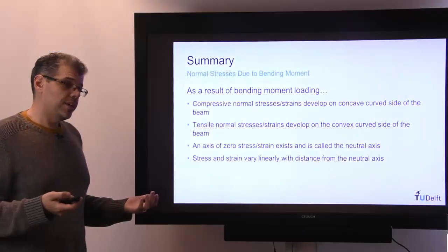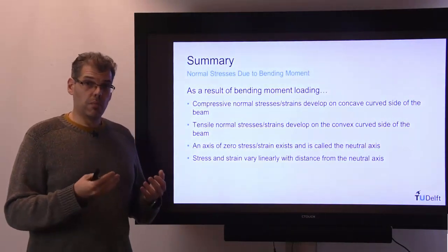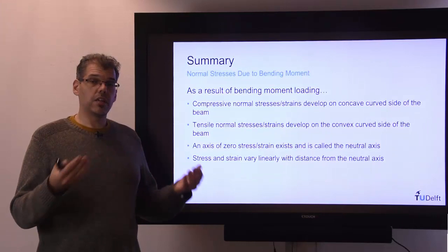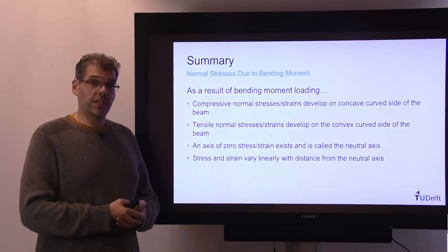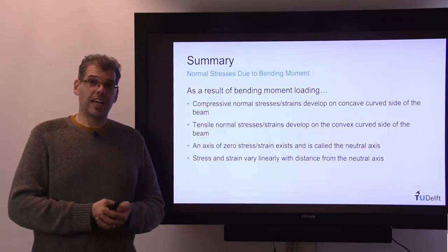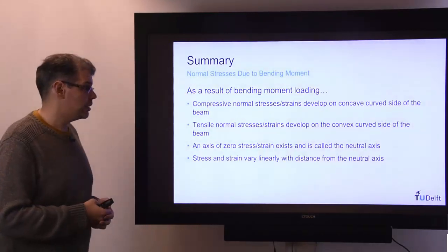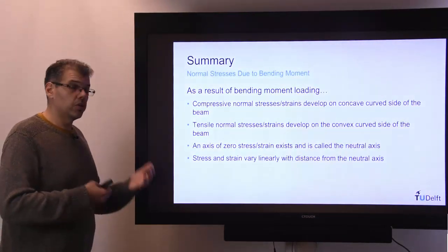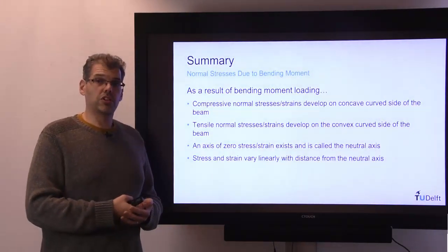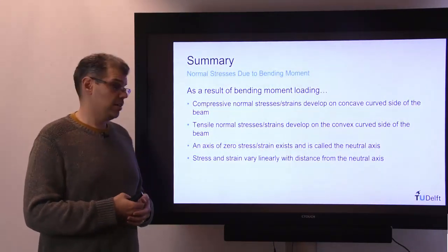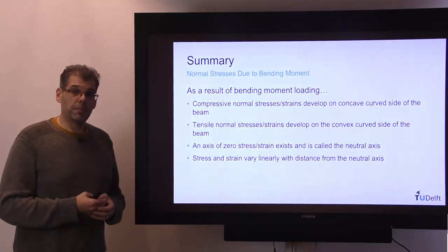So in summary, we looked at the deformation of a beam due to a bending moment, and saw that we have elongation and contraction strains. These are a result of normal strains within the beam cross-section, and the distribution of these strains are in fact linear with the distance from the neutral axis. Using Hooke's Law, we can then also prove that the stress distribution, the normal stress distribution, must also thus be linear. And that is the stress and strain distribution in a beam due to bending.